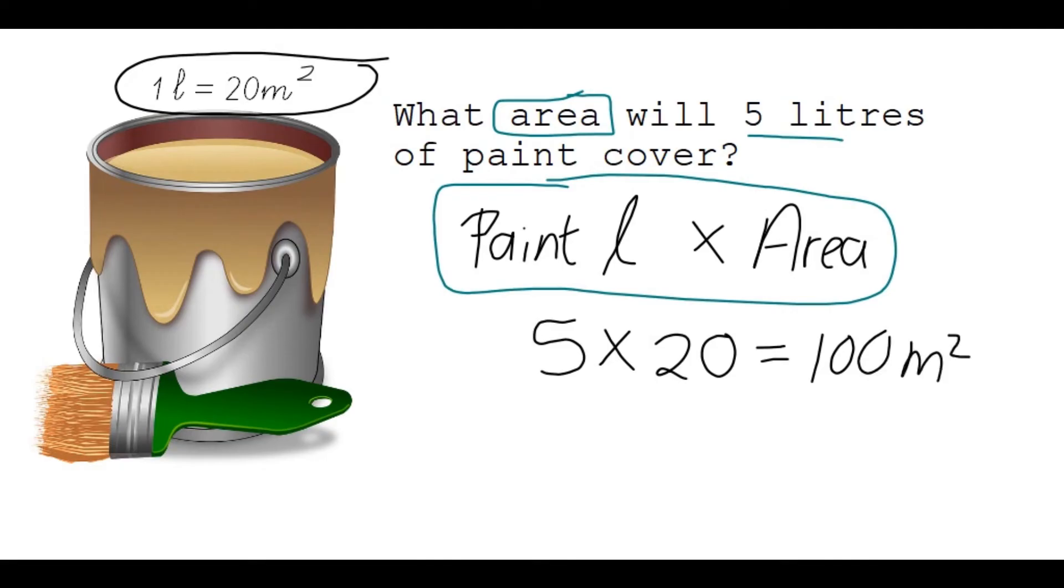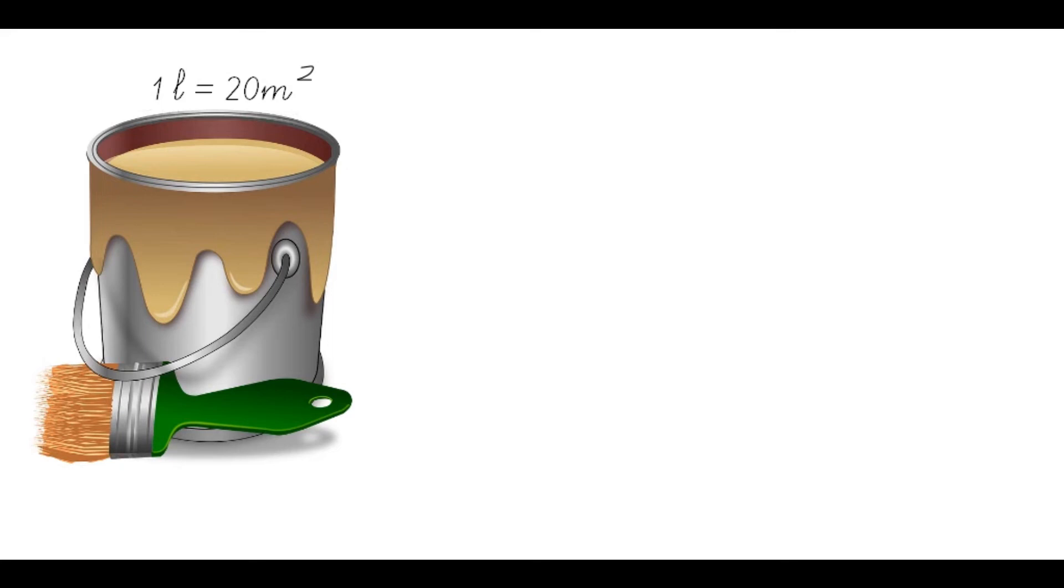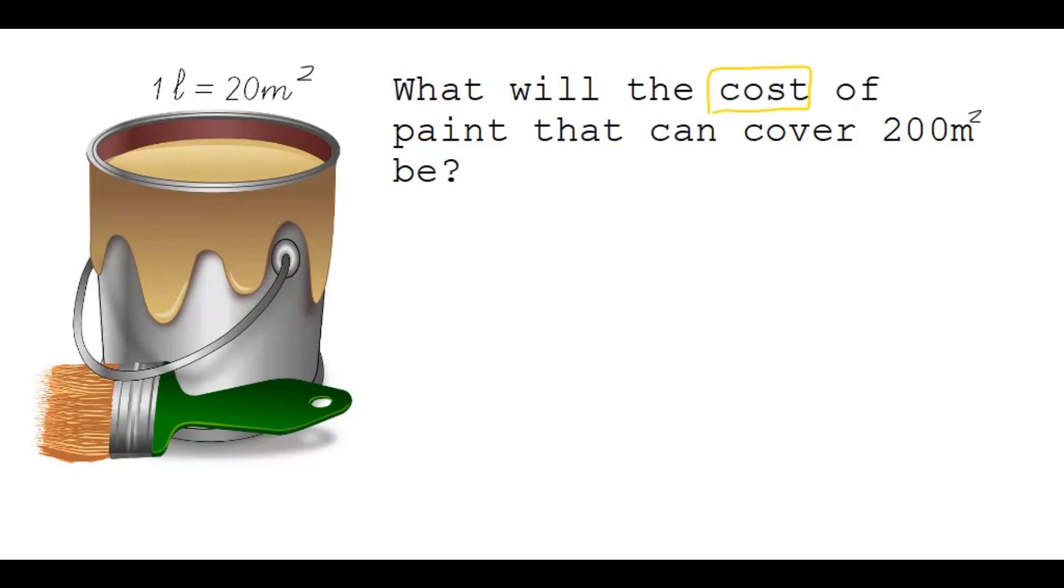The last type of question now is the cost one. So what will the cost of paint that can cover 200 square meters be? In this case, I first need to determine the price for one square meter. If I know the price for one square meter, then I can multiply by the amount of square meters that I need, which is 200.